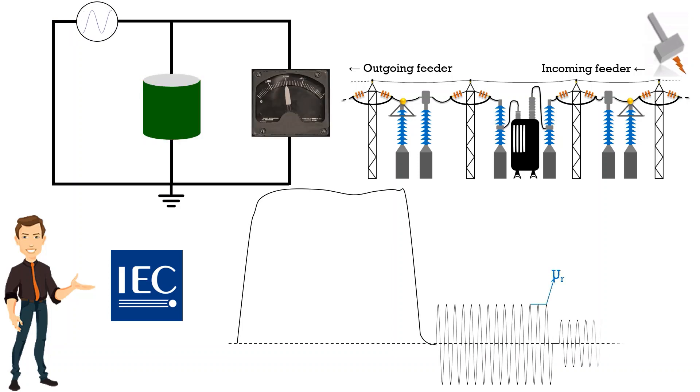This can be interpreted as the voltage that can be applied across arrestor terminals demonstrating thermal stability after operating duty tests.